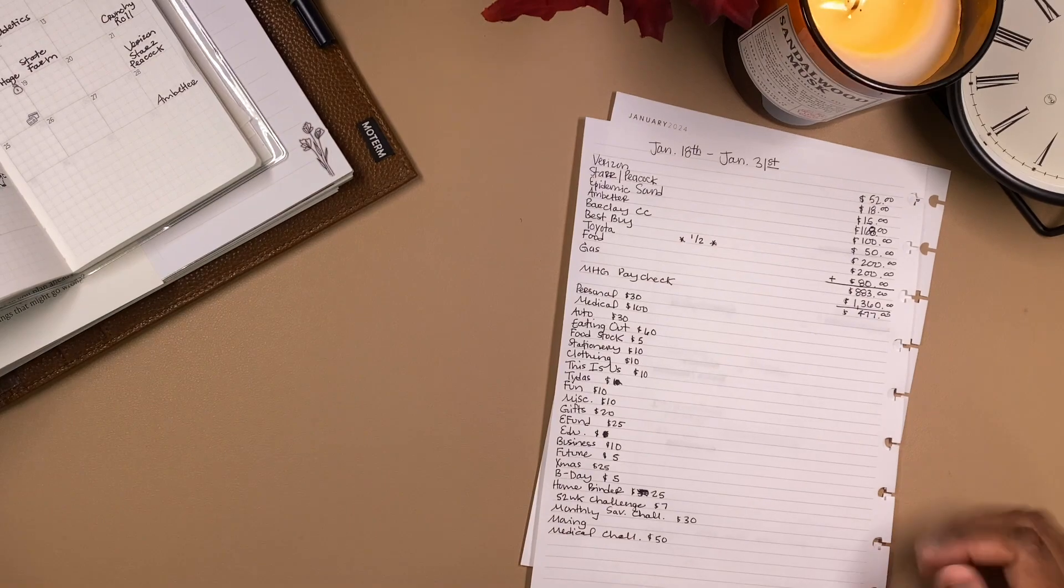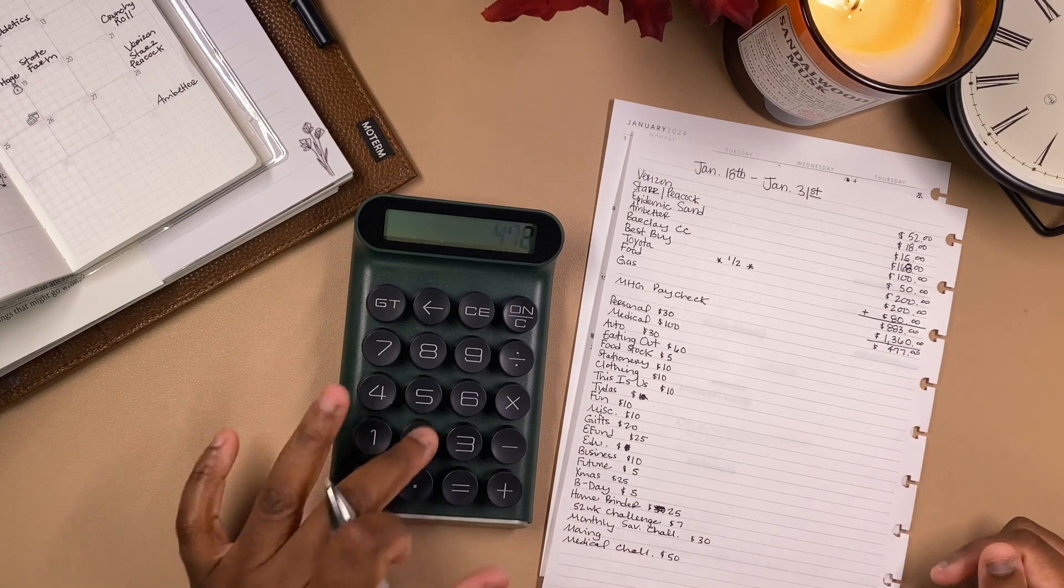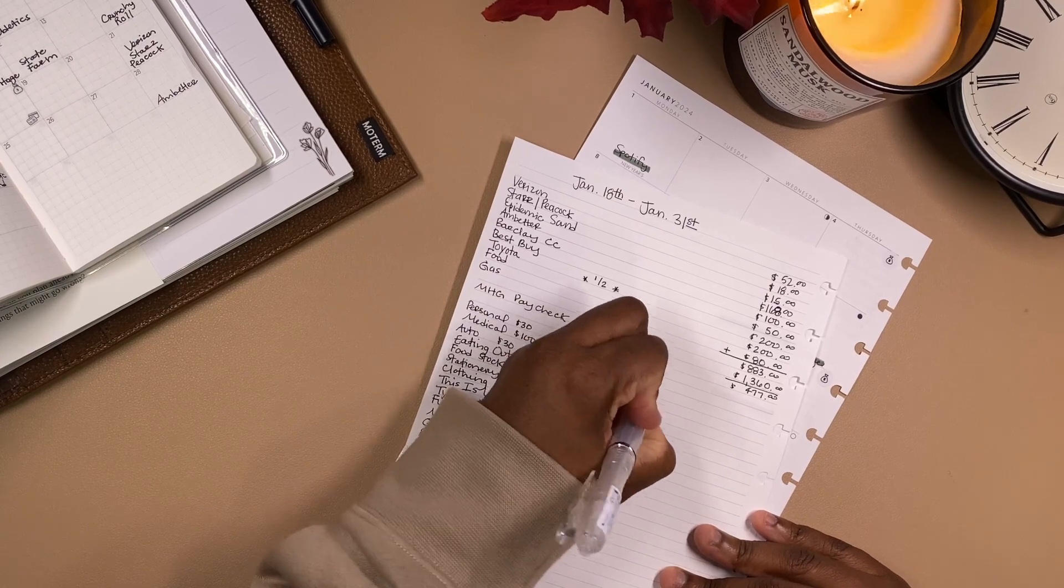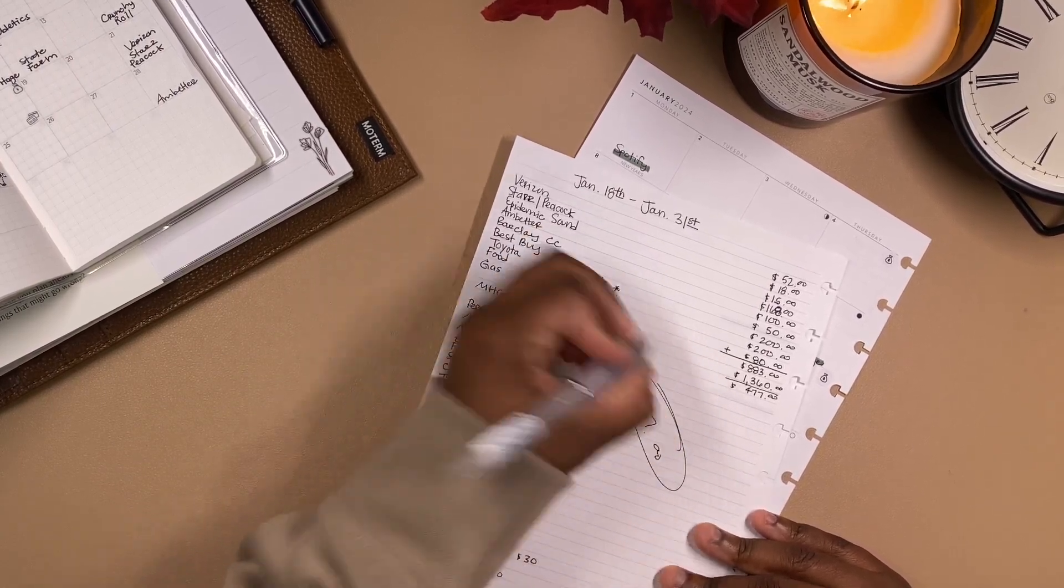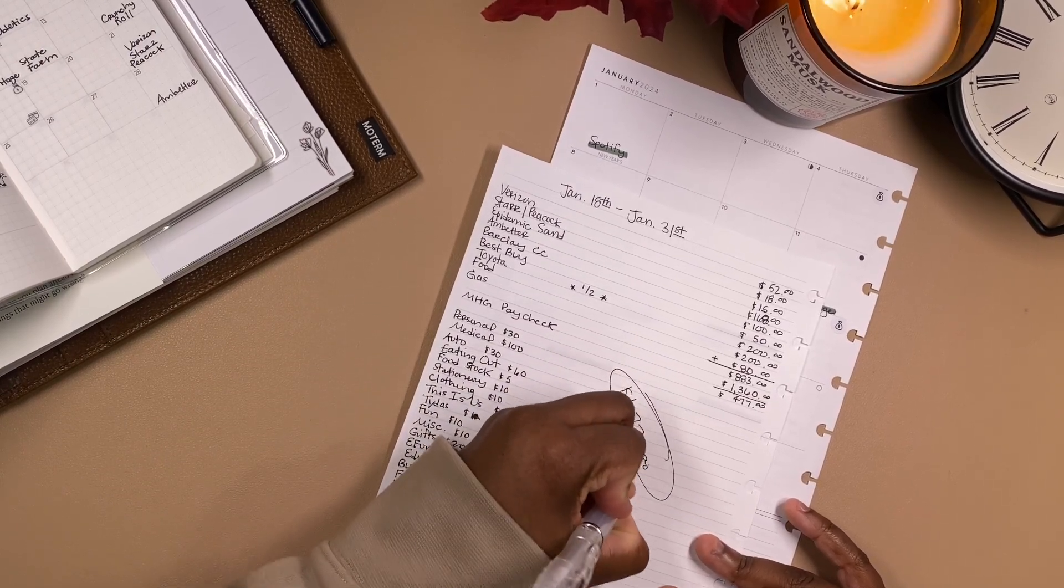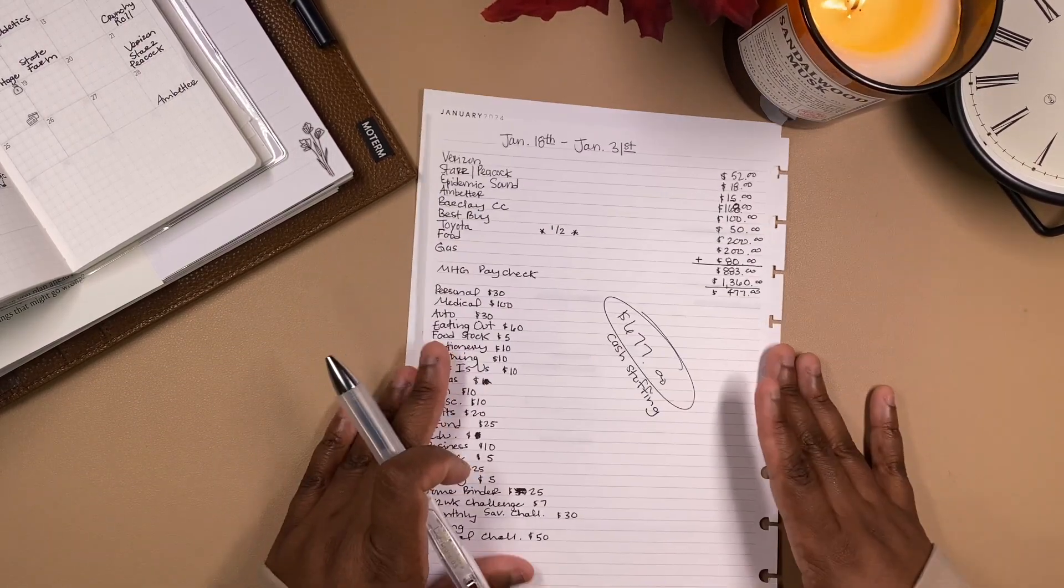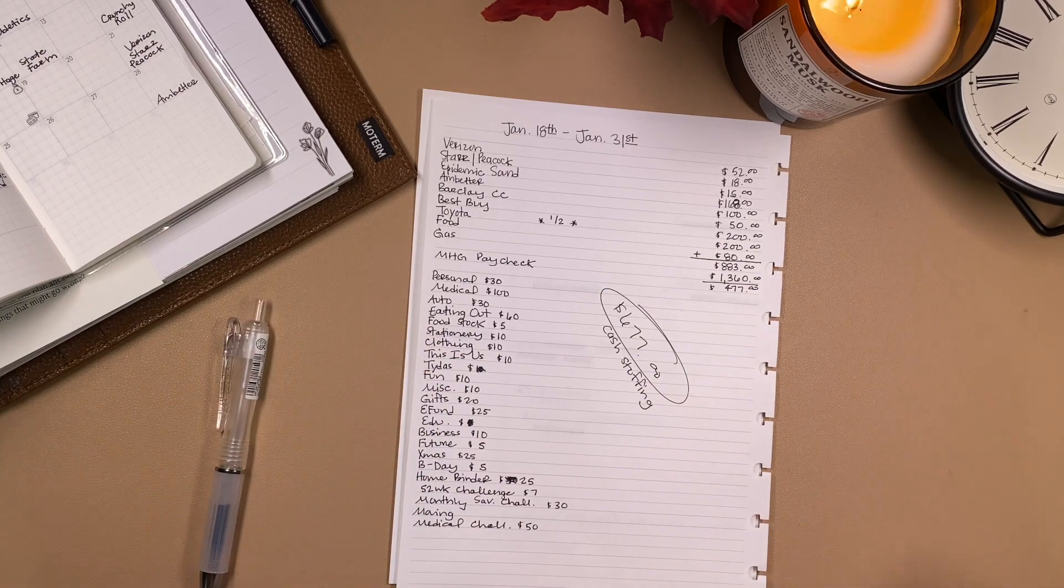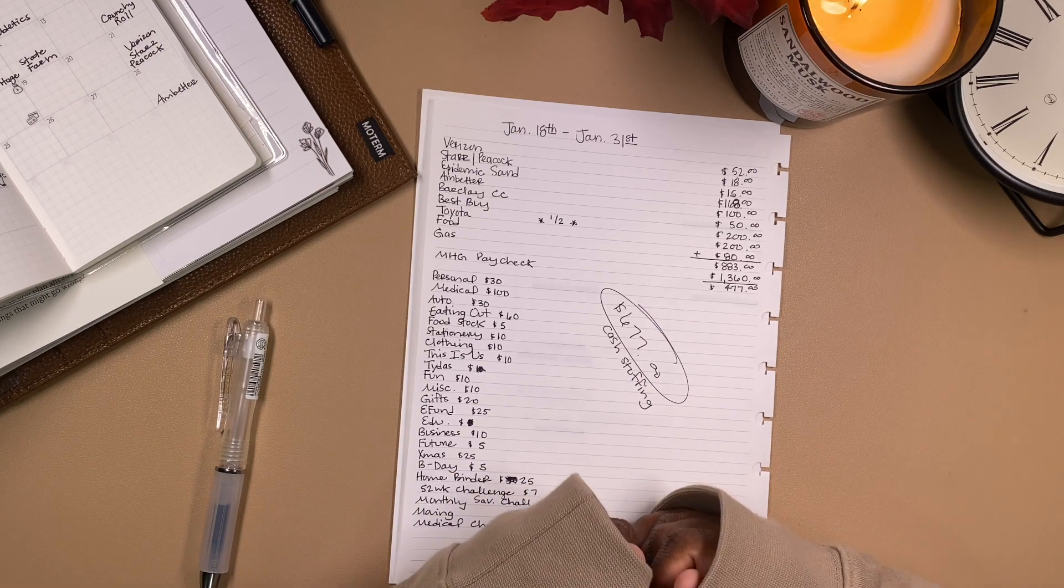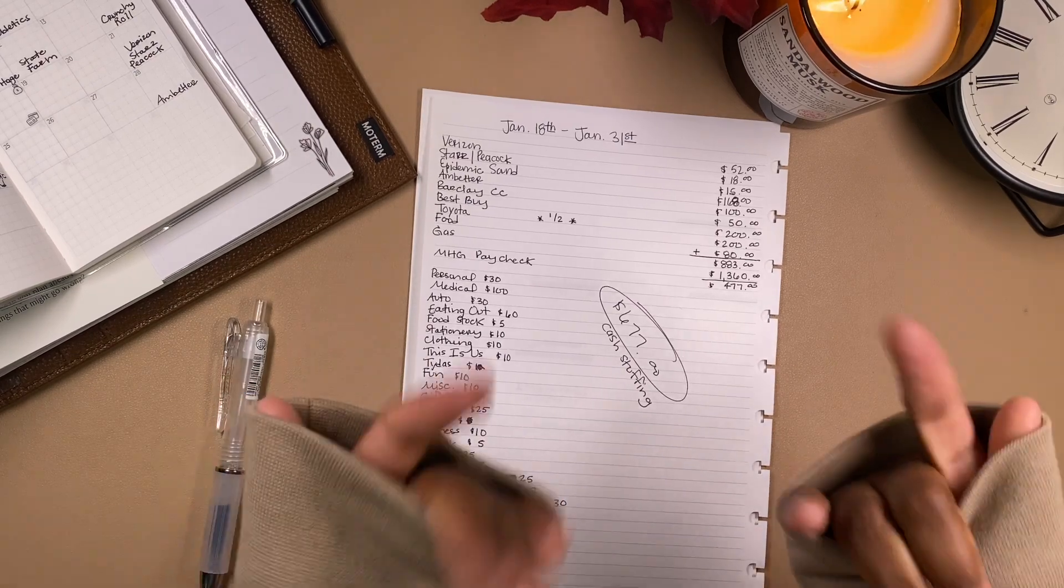Alright, we're up to $477. And as you... I always forget to do this. I add in my food because I take that out in cash, and so we have $677. That is what we're going to be cash stuffing tomorrow, and tomorrow's video. So stay tuned for that. But thank you so much for watching this budget with me. I know it was a little long, but thank you for holding on there. If you stayed all the way to the end, please subscribe and like the video if you want to see more. And I will see you guys in the comment section. Bye guys!